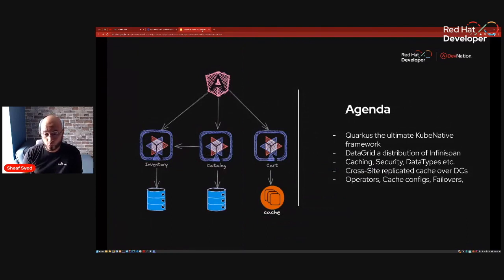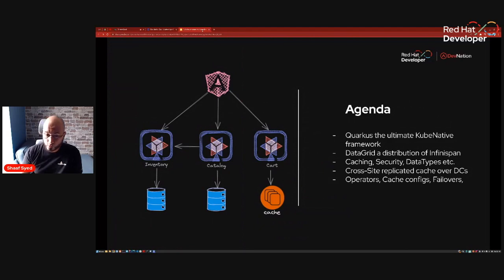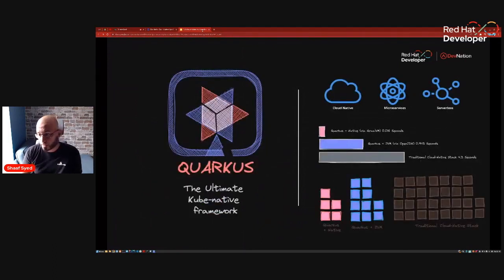What am I going to cover? I'm going to talk a little bit about Quarkus, the ultimate Kubernetes-native framework. I'm going to talk about DataGrid, which is a caching solution. If you've heard about the InfiniSpan upstream project, we're going to go into details around that and how it works on Kubernetes, like a distribution like OpenShift — what features it has. I will be showcasing demos throughout this talk, including a demo for cross-site replication across different data centers.